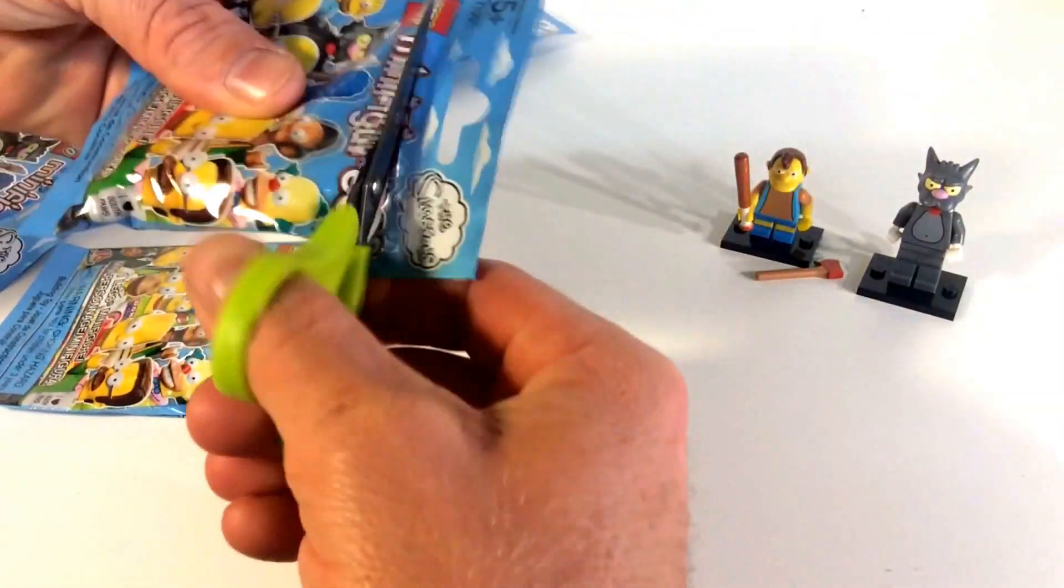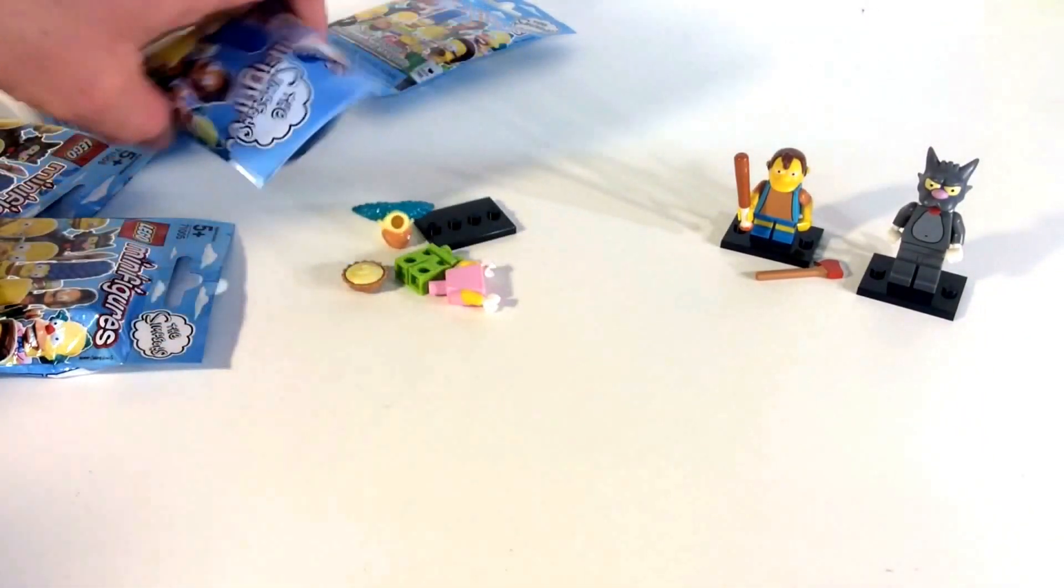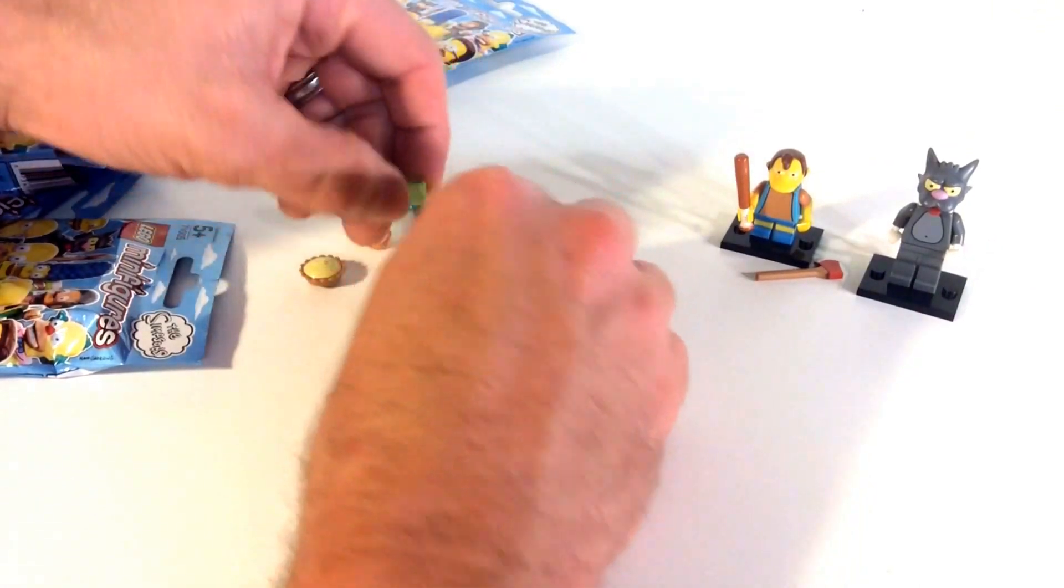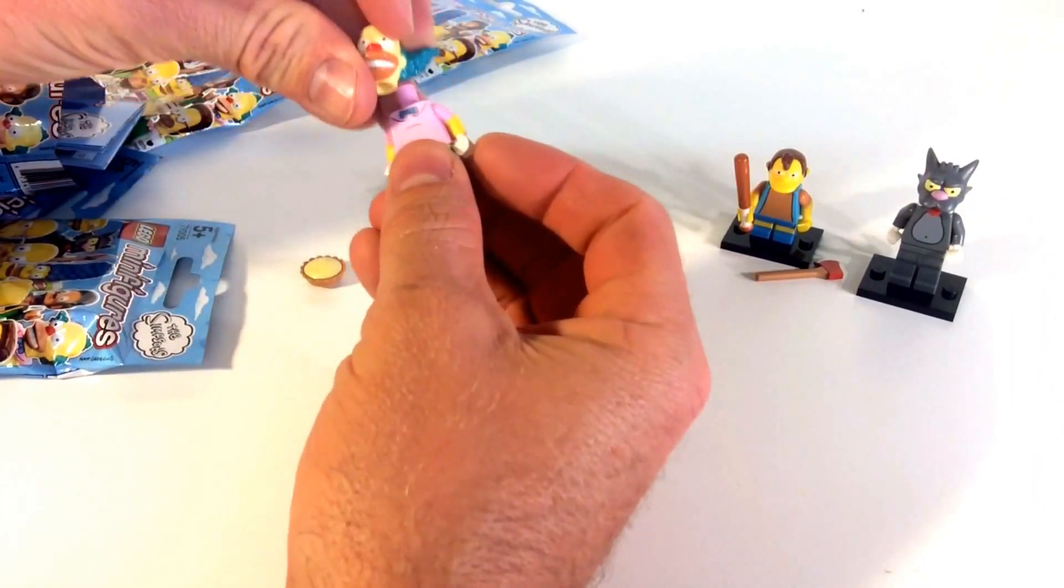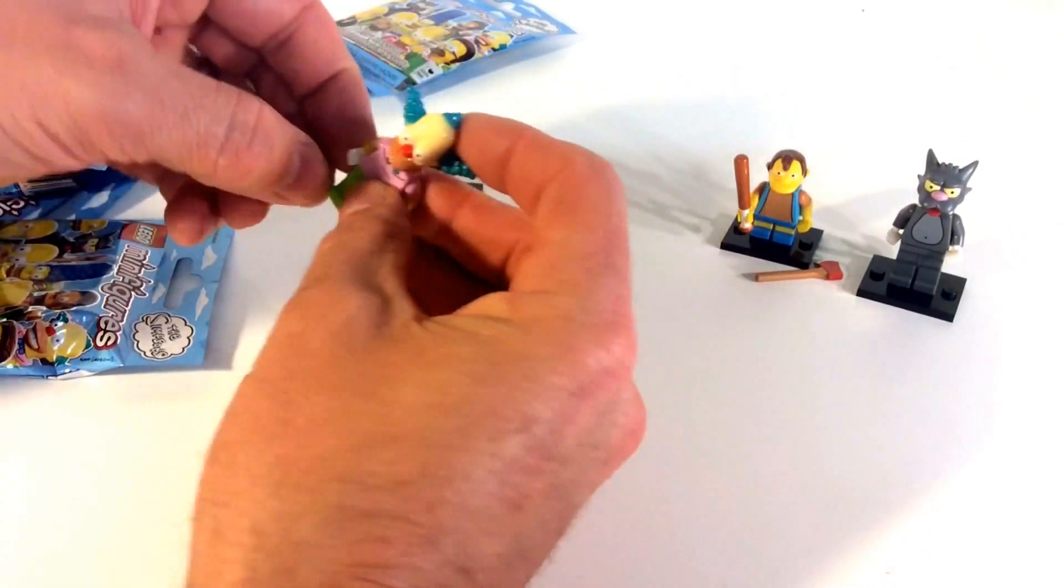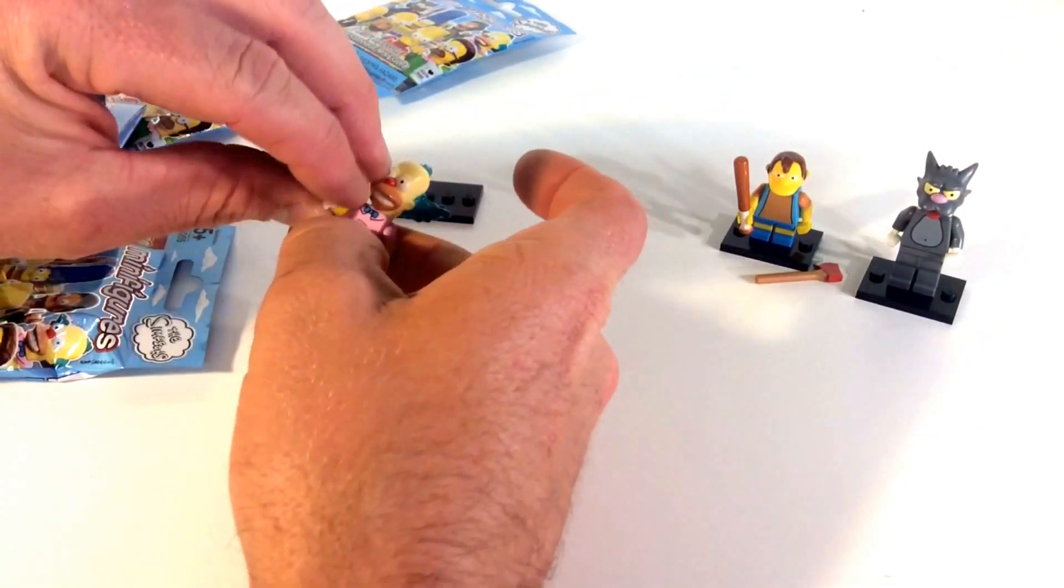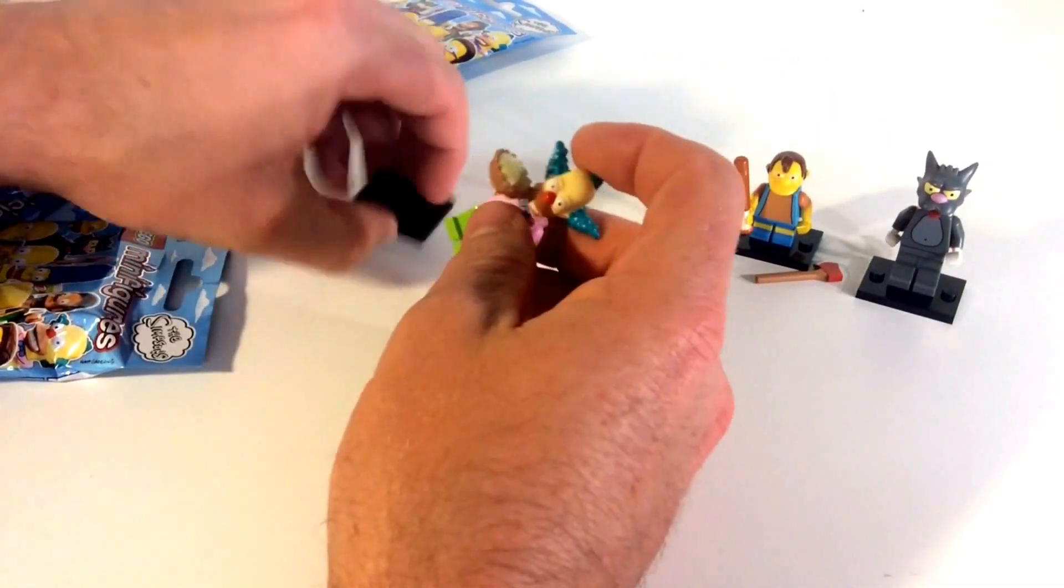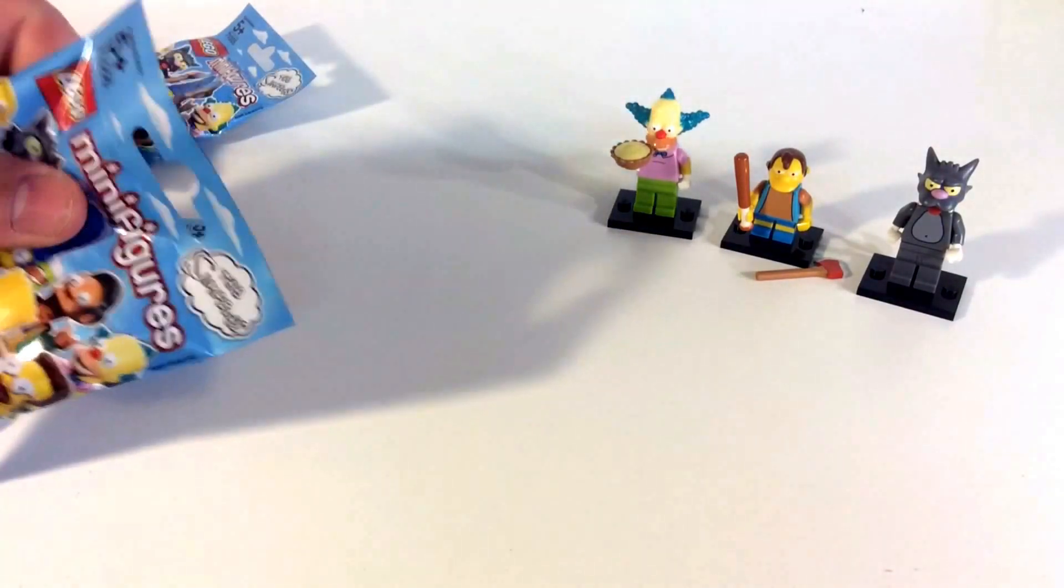Next one, let's see what we get. These were four dollars at Walmart. I missed them completely when they were on sale at Walmart. I know a lot of you guys got them for three bucks. I knew that was going to happen, I wouldn't be able to find them. But I'm impatient and I couldn't wait to get them so I found them. And here, that's Krusty the Clown, I do know that one.